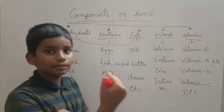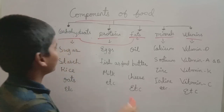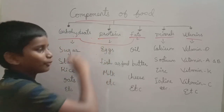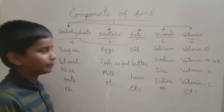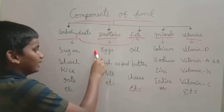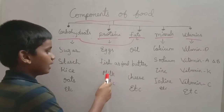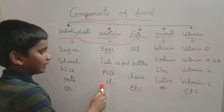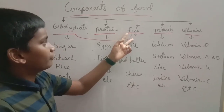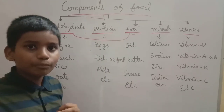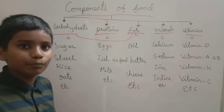Next, proteins. Proteins are body-building food. The importance of proteins is body-building. If you want to go to the gym, then you should maintain proteins in your diet. Sources of proteins are egg, fish, fish oil, milk, etc.